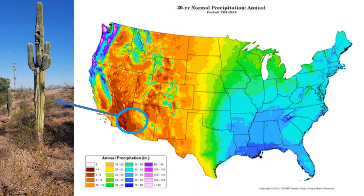To set this up, going back to fall semester, we understand that there are certain parts of the country that get a lot of rain and other places that don't get much rain at all. Consider this area down here in the southwest — it's a desert, doesn't rain much, but a lot of people live there.